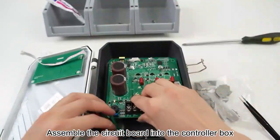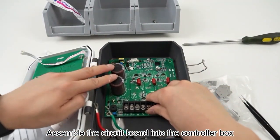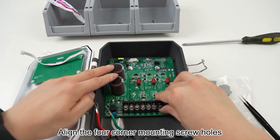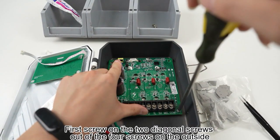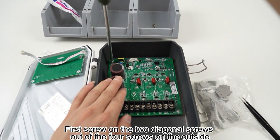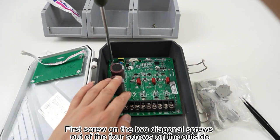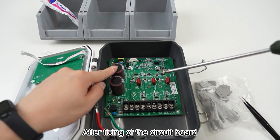Assemble the circuit board into the controller box. Align the four corner mounting screw holes. First screw on the two diagonal screws out of the four screws on the outside. After fixing the circuit board.